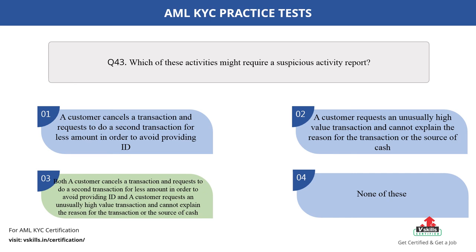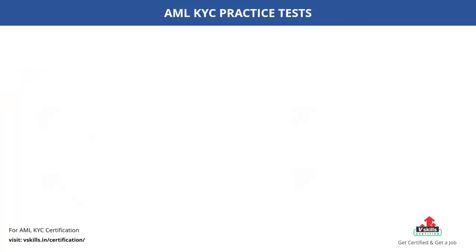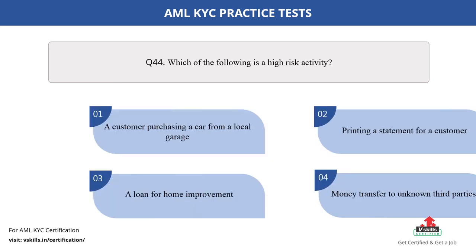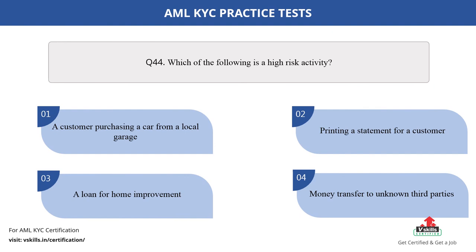Question number 44. Which of the following is a high risk activity? The options are: A. A customer purchasing a car from a local garage; B. Printing a statement for a customer; C. A loan for home improvement; D. Money transfer to unknown third parties. The correct answer is option D.